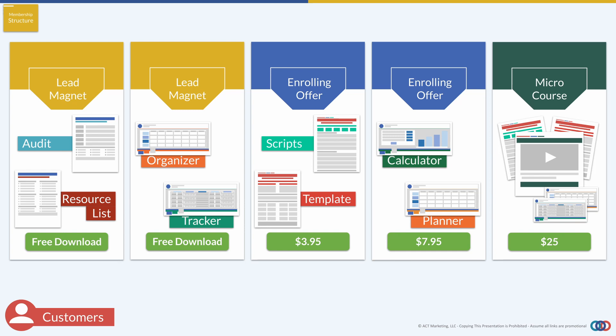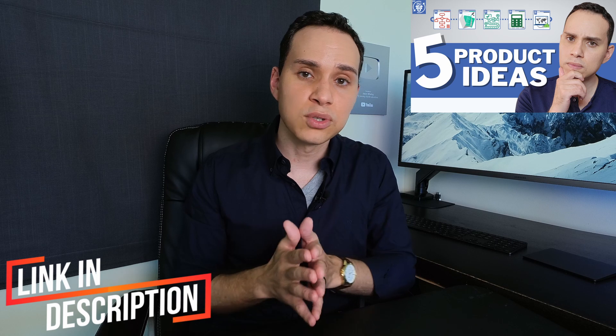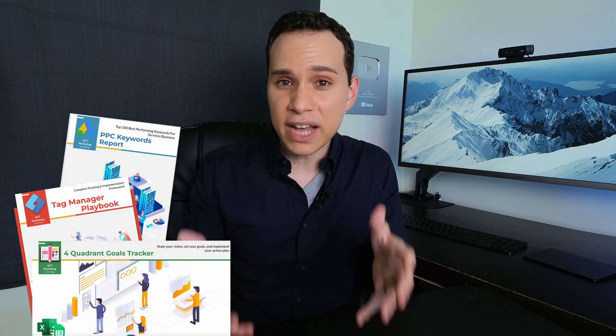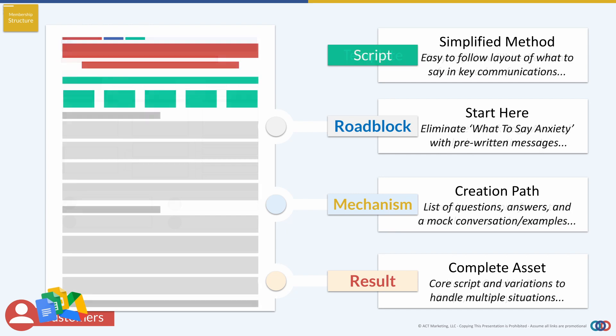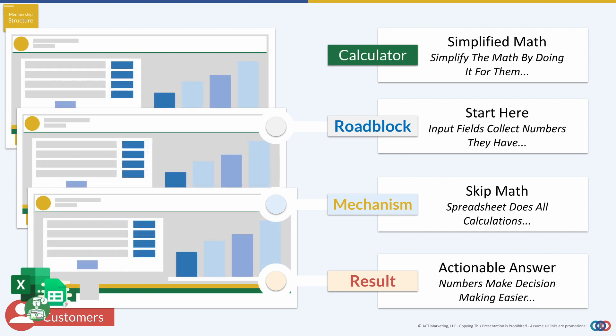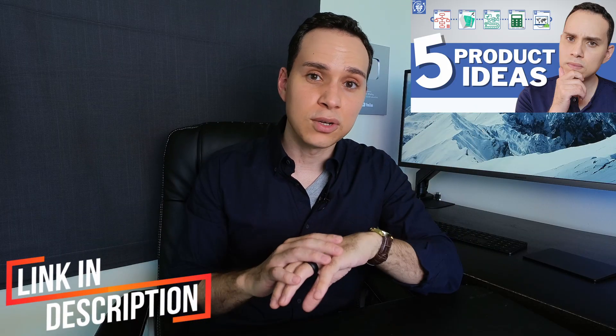Here's a quick example of things you can include: an audit, resource list, organizer, tracker, script, template, calculator, planner, and little micro courses — maybe 20 or 30-minute guides that go through one specific part of the overall process. You can create lots of different small digital products, bundle them together, and include them inside your membership site. Personally, I like creating templates, scripts, and trackers because those tend to be really valuable to someone genuinely trying to achieve results, and they're a great complement to whatever newsletter or webinars you have in your ongoing membership.